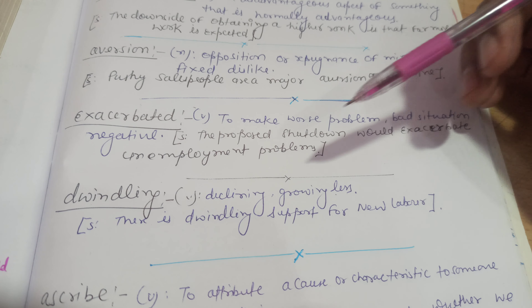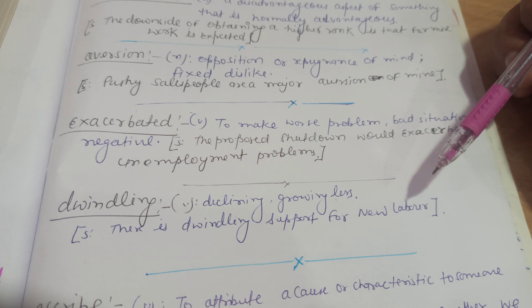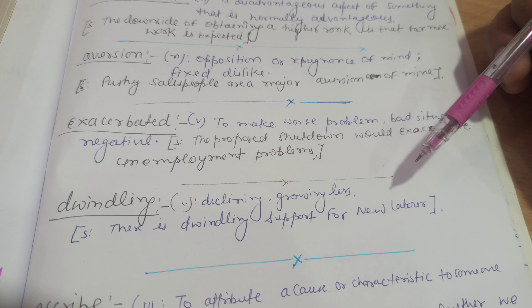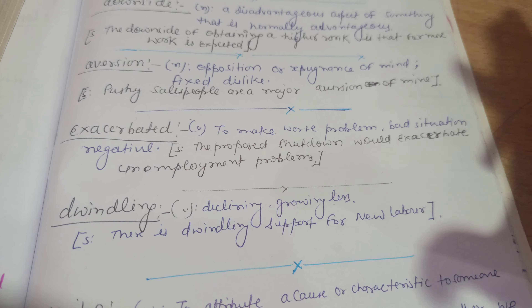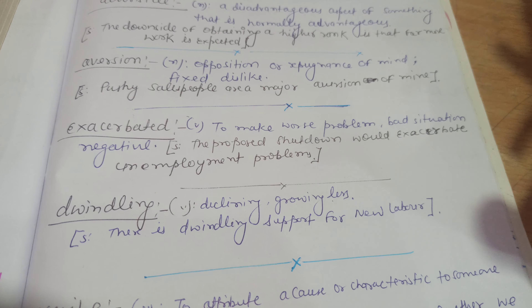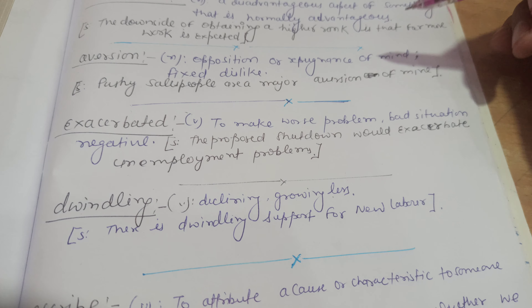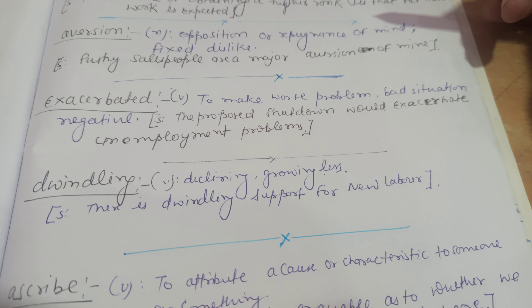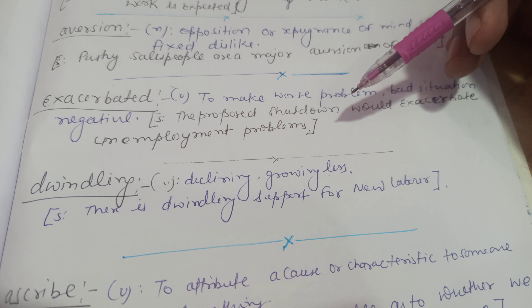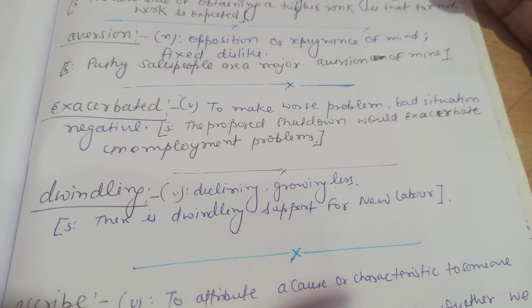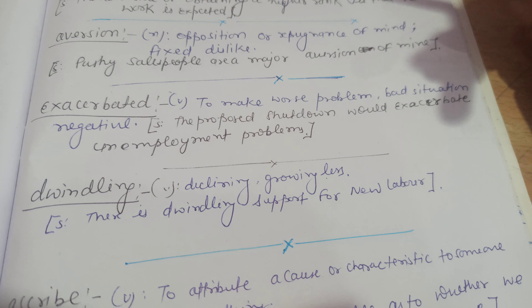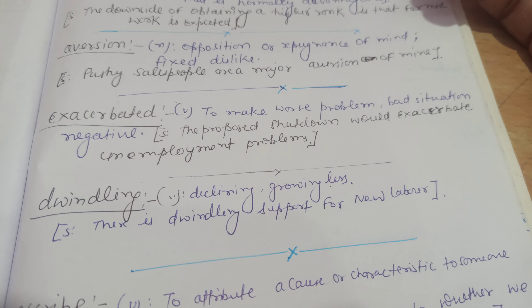Dwindling. This is a verb meaning declining or growing less — something that is going down and becoming less. The sentence is: there is a dwindling support for the new labor code. We can also say there is a dwindling support for a new election policy or new educational policy — in reference to government policies.